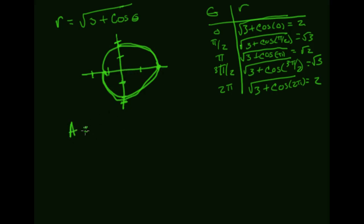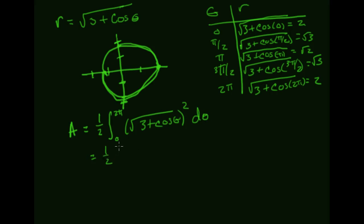The area formula for a polar integral is one half times the integral. I want to go from zero to two pi of r squared, so that's times the square root of three plus cosine theta, squared, d theta. That simplifies to one half from zero to two pi of three plus cosine theta d theta, because r is positive all the way through.